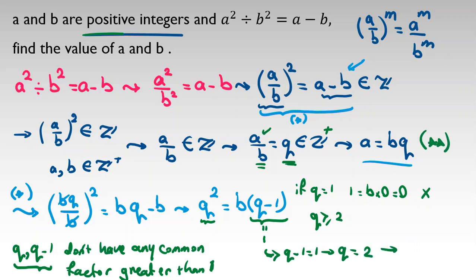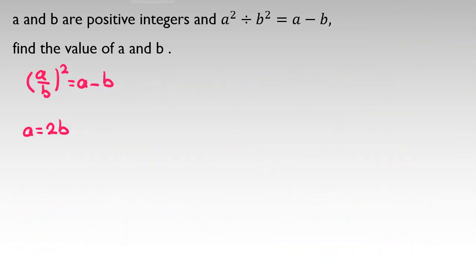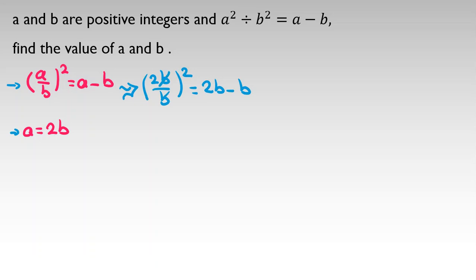We conclude q minus 1 equals 1, so q equals 2. From our substitution, a equals bq equals 2b. Now substituting a equals 2b back into the original equation: 2b over b squared equals 2b minus b. The b's cancel on the left giving 2 over b, and the right side gives b. Wait — more carefully: left side is 2b over b squared which simplifies to 2 over b... actually the left side after cancellation gives q squared equals b(q-1), so with q=2: 4 equals b times 1, giving b equals 4.